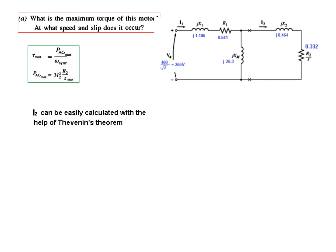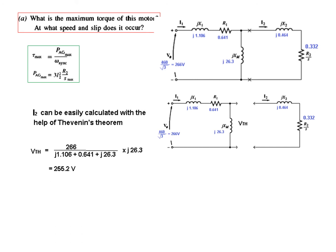I_2 can be easily calculated with Thevenin's. We separate the load and calculate V_Thevenin at this point. V_Thevenin can be calculated as the input divided by total impedance, multiplied by this impedance X_M, which is 26.3j. So V_Thevenin comes to be 255.2 volts. If you know how to use your calculator in complex mode you can do this directly.